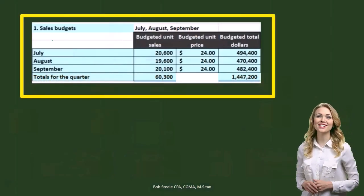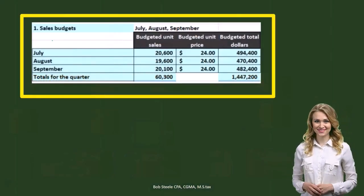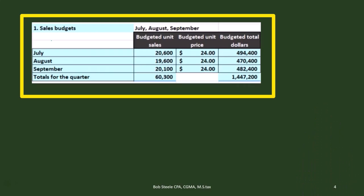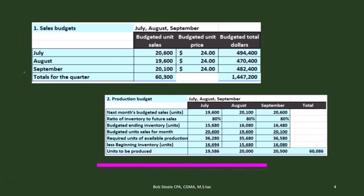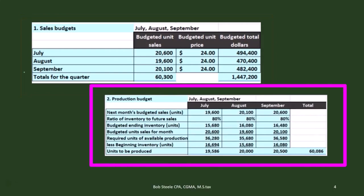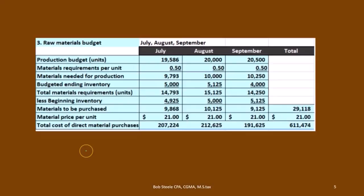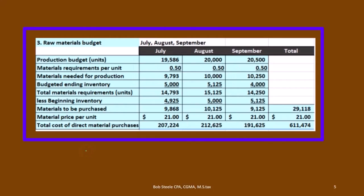Now remember that last time we already did the sales budget — here's just a recap of what it looked like. We used that sales budget to create the production budget, determining how many units we needed to produce. Then we used that for step three to create the raw materials budget. That's where we left off last time, and now we're moving forward.